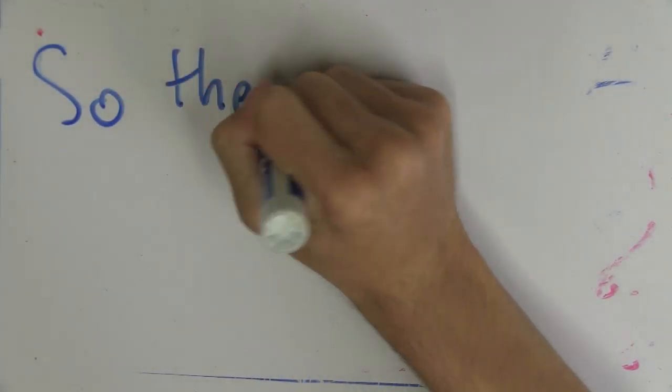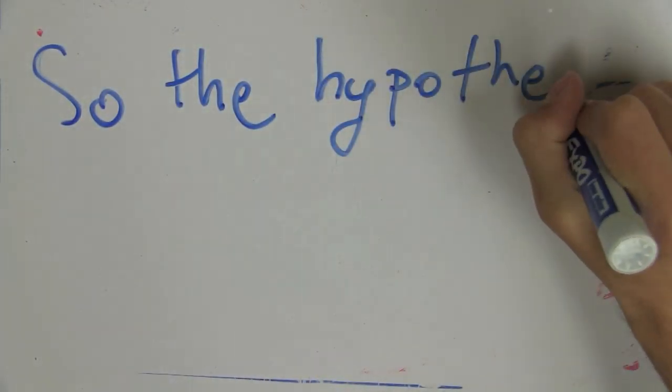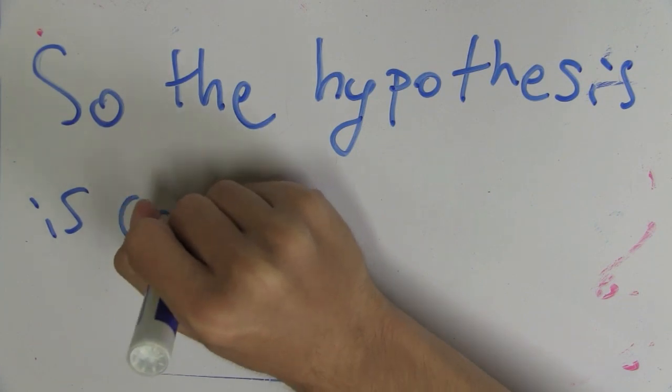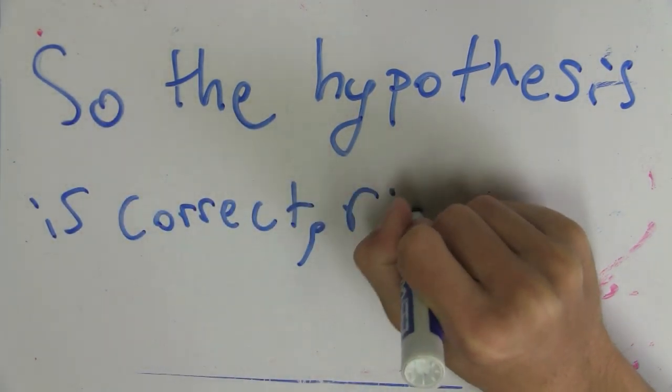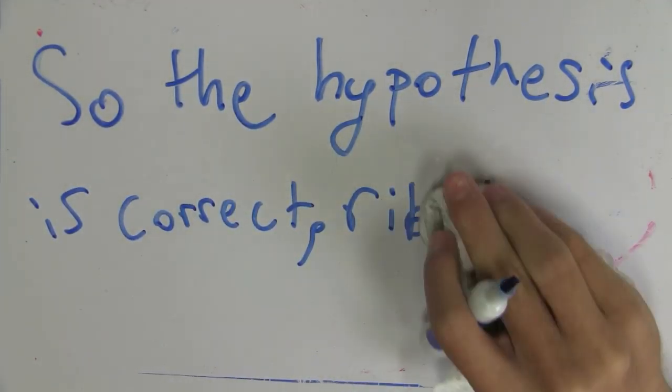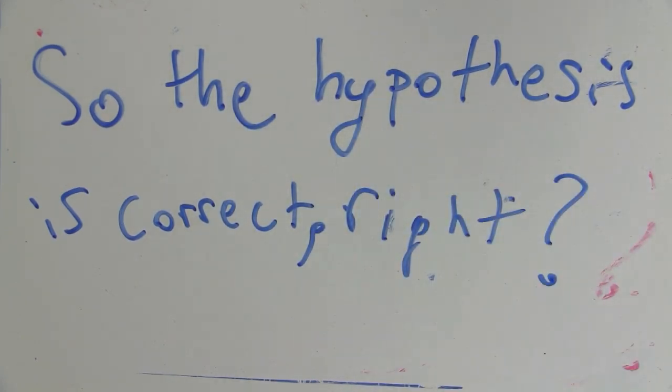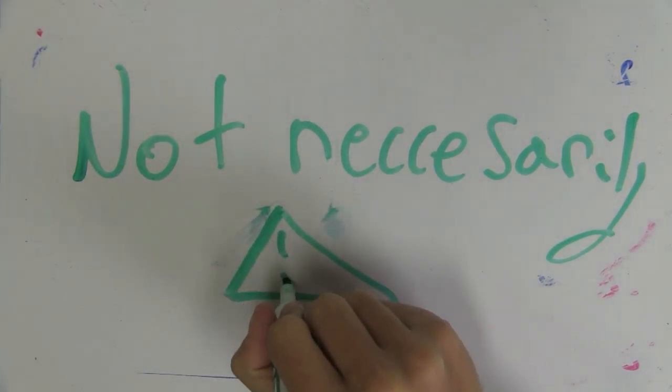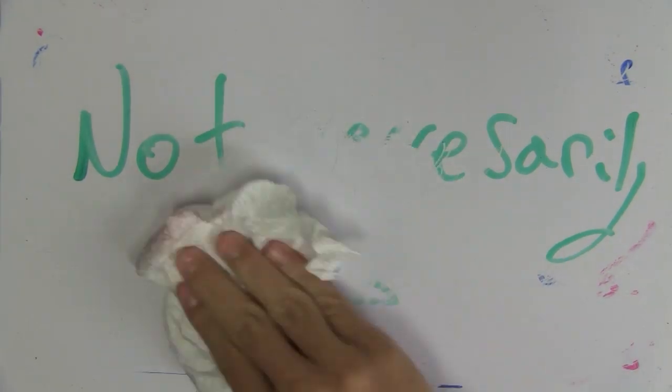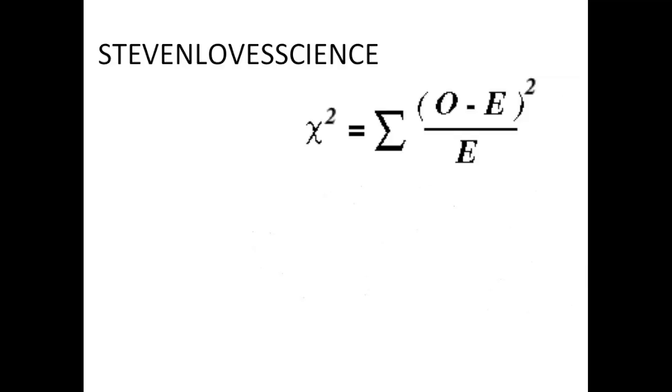So our hypothesis is consistent with the collected data. So does this mean that the hypothesis is correct? So our hypothesis is correct because it's consistent with chi-square graph, no? Not necessarily. See, the chi-square graph only tells us whether or not our data is consistent with our hypothesis, not whether or not our hypothesis is correct. Thanks for watching, Stephen Love Science.